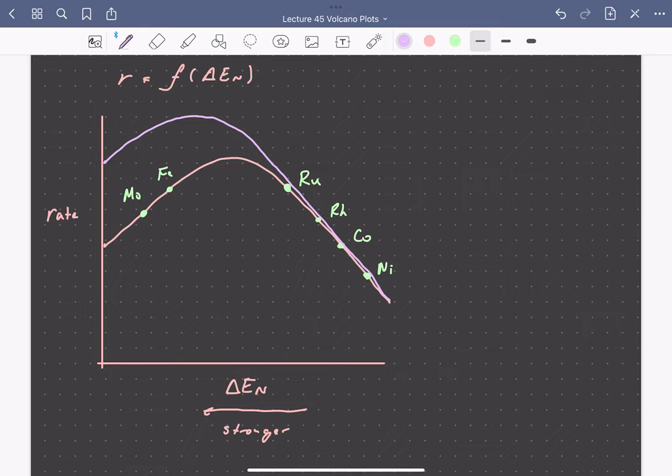So this volcano relationship both allows us to qualitatively understand why different catalysts are better than one another, and it gives us a quantitative prediction of where we need to be in adsorption energy to design the best catalysts.